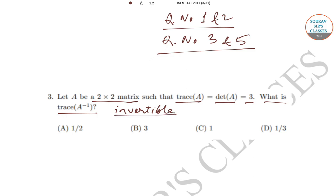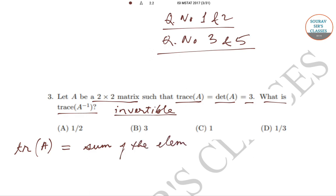Now, trace — what do you mean by trace? Basically, the trace of any matrix A is denoted by tr(A), and that is equal to the sum of the elements in the principal diagonal.